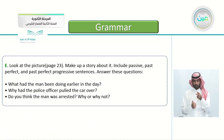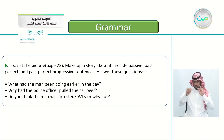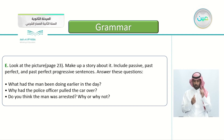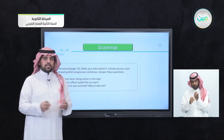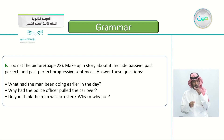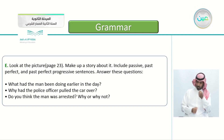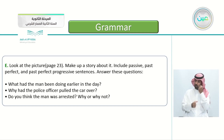The next exercise: look at the pictures on page 23, open your books. Make up a story about it, including passive, past perfect, and past perfect progressive sentences. Answer these questions: What had the man been doing earlier in the day? Why had the police officer pulled the car over? Do you think the man was arrested? Why or why not? Use everything we learned today — whether events came one after another or crossed each other — and use the passive to focus on the action.